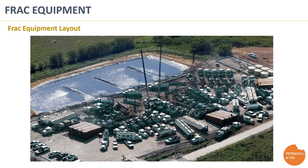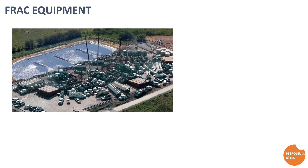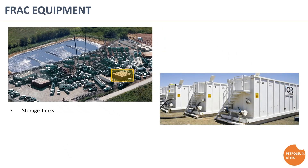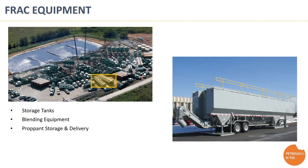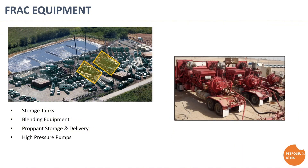Moving on to the equipment used in frack execution. As you can see from the picture, the well site is quite busy with equipment. Storage tanks are used to receive and store frack fluid. Blending equipment is used to mix water with the required chemicals and proppant and deliver the mixture to the high-pressure pumps. Proppant storage and delivery consists of compartments that store proppant and deliver it to the blender through a conveyor belt. High-pressure pumps are a group of positive displacement pumps connected in parallel to pump the mixture at high pressure with the designed pumping rate.